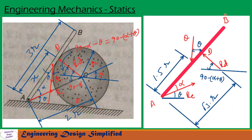Now let us draw the free body diagram of bar AB. On bar AB, force RC acts at angle alpha from the bar and theta from the horizontal. The bar's own weight Q acts vertically downwards, and reaction RD acts perpendicular to the bar. The distance from A to the point of application of Q is 1.5R, since the total length is 3R, and the distance from A to D is √3 · R as calculated previously. Since angle alpha is at one side and 90 degrees at D, the complementary angle is 90 − (alpha + theta).